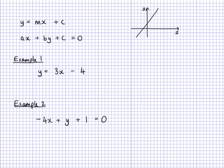Here are two examples. The first example is in the y = mx + c form. I've got y here, and 3x which is similar to mx, so m has been replaced by 3. And take away 4 here, similar to plus c, so I can say that's plus negative 4. So c is negative 4. This equation would have a positive gradient because m is positive 3.